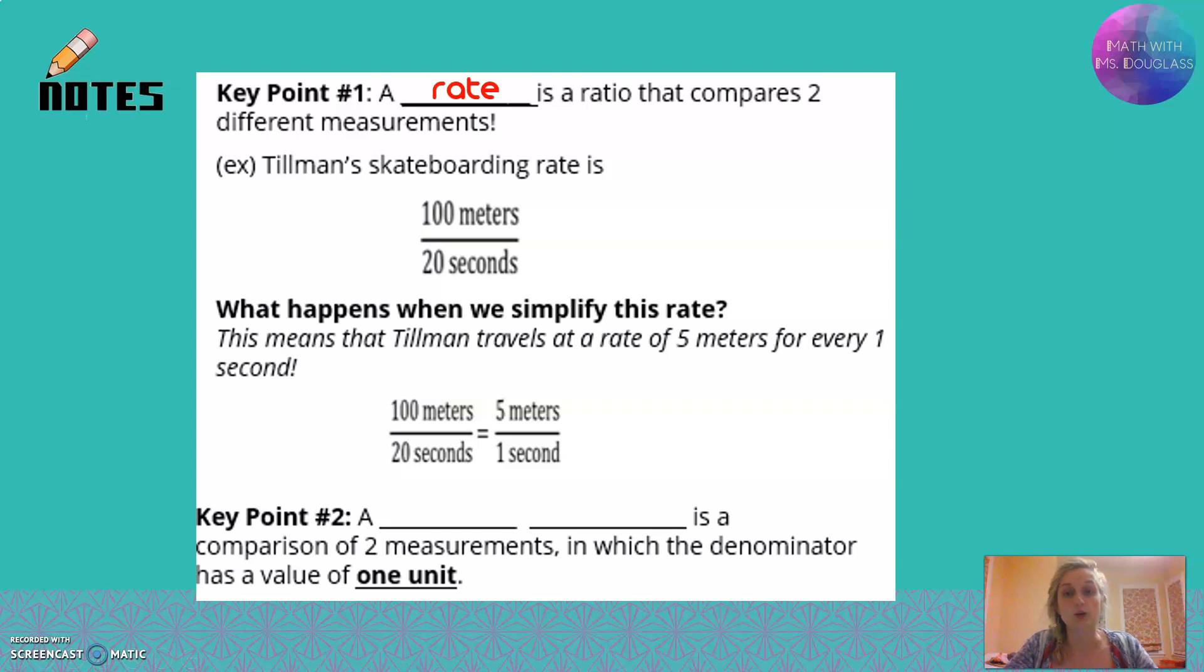A rate is a ratio that compares two different measurements. For example, Tillman, who's a Guinness Book of World Record holding skateboarding dog, skateboards at a rate of 100 meters for every 20 seconds. We've got two different things going on: meters and seconds.